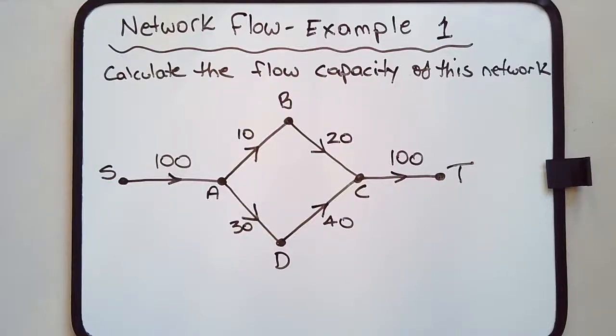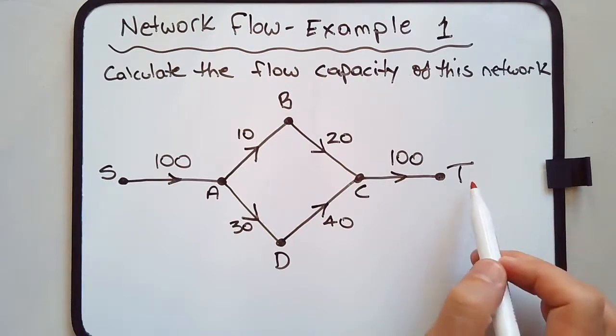Let's look at another example of network flow where we want to calculate the flow capacity of this network. Recall that the source is usually labeled with the letter S, uppercase S, and the sink is labeled with an uppercase T.